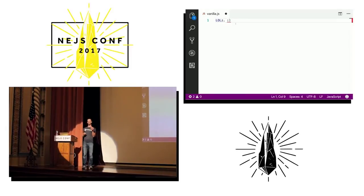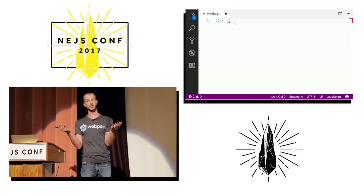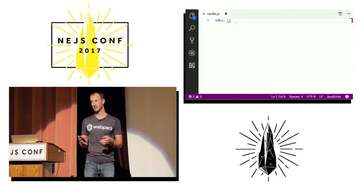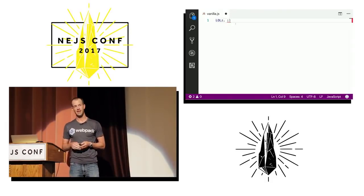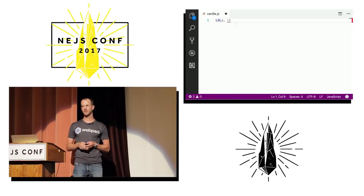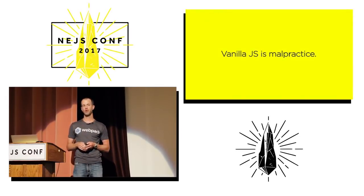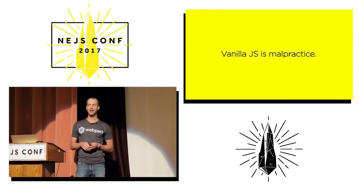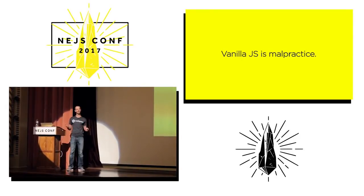They would point out vanilla JS was — not surprisingly — faster because it removed a layer of abstraction. This was funny at the time and caught some level of attention. However, I believe that vanilla JS is malpractice. As developers today, if we're not leveraging each other's work, we are wasting time — we are reinventing the wheel. We should be standing on the shoulders of giants.